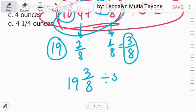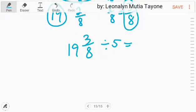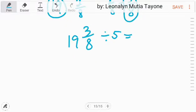We'll divide this by 5. When dividing or multiplying fractions, we need to convert this mixed number to an improper fraction first. 19 times 8 is 152 plus 3 is 155.